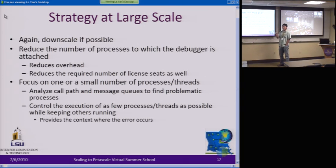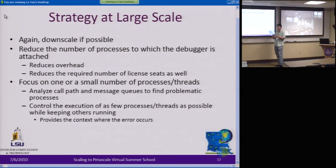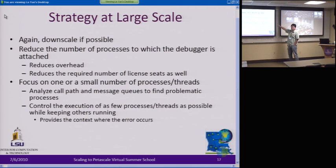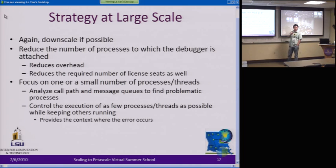Each process you attach the debugger to takes one license. So you can run a program with 1,000 cores, but if you only attach the debugger to 10 processes, it will only use 10 licenses. Reduce the number of processes you attach your debugger to, and if possible just focus on one process.